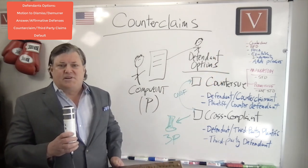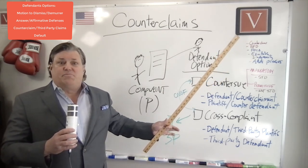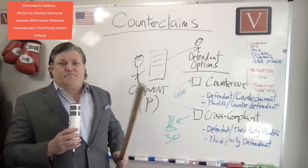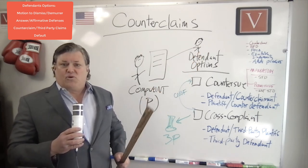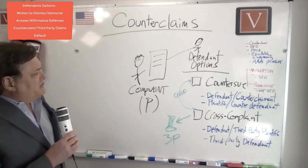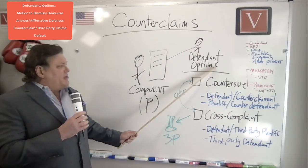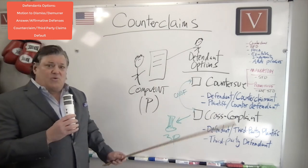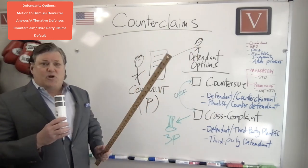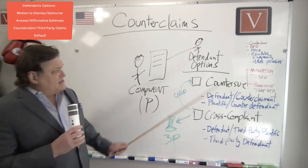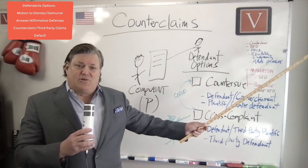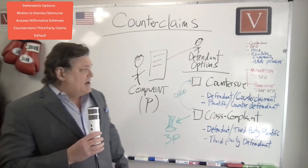Number one, the defendant can file a motion to dismiss — there's a variety of grounds. It may also be called a demurrer, for example in state court. In federal court it will be called a motion to dismiss. The defendant can also answer the complaint and assert affirmative defenses — answer and affirmative defenses — that's very typical of what you may see.